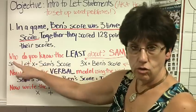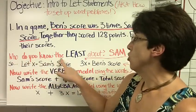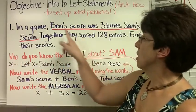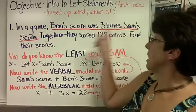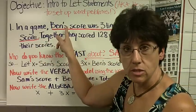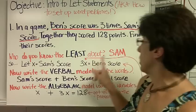So, how do you do this problem? You think, who do you know the least about? Well, it says Ben's score was three times Sam's score, so you know a lot about Ben's score, so you know the least about Sam.